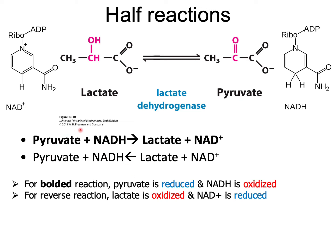In converting lactate to pyruvate, NAD+ has a very big role to play. Pyruvate, when reacted with NADH, gets converted to lactate and NAD+. NADH is acting as a reducing agent — it gives electrons to pyruvate and gets converted to NAD+. At the same time, pyruvate, by accepting the electrons, gets converted to lactate. Hence, pyruvate is reduced and NADH is oxidized in the reaction.